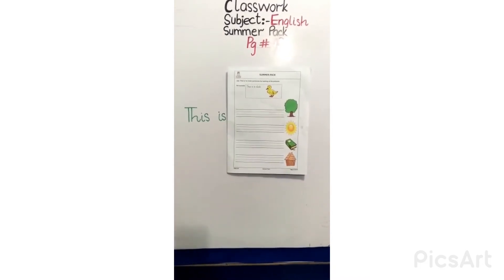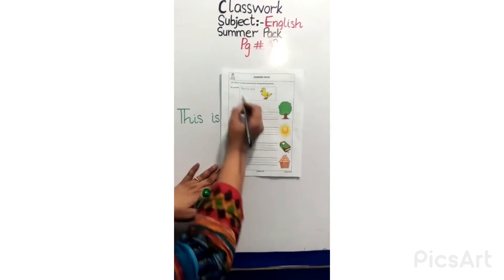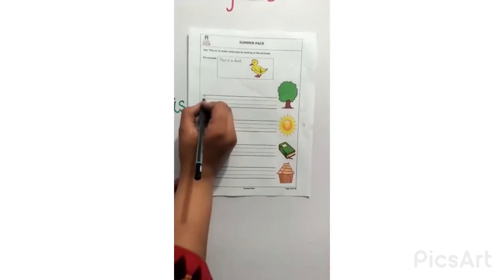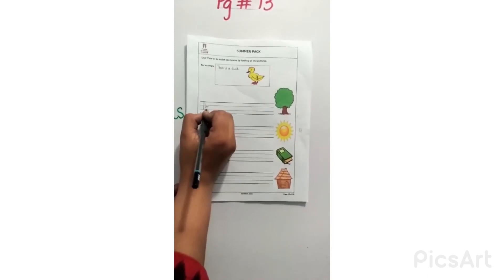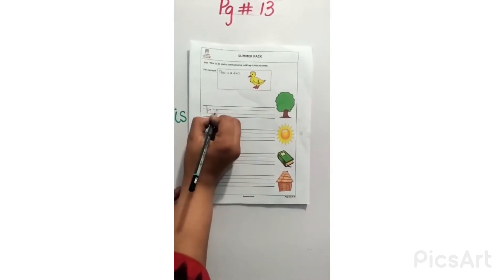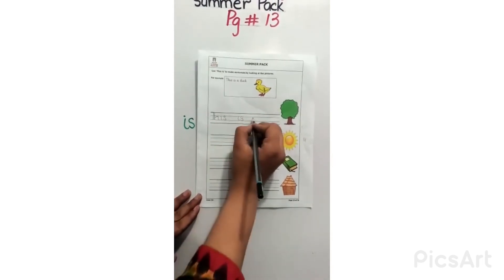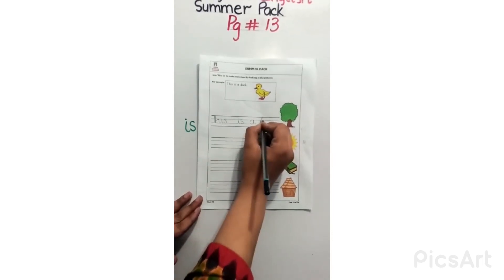Now I will write first sentence for you. For example, this is done for you, this is a duck. Now for tree, we will write T, H, I, S, this, I, S, is a tree.